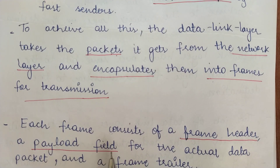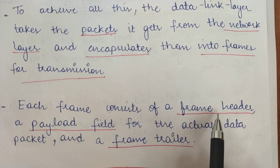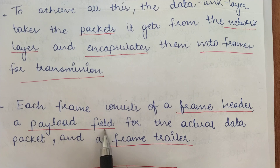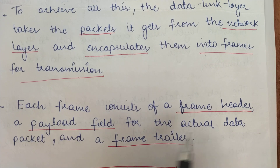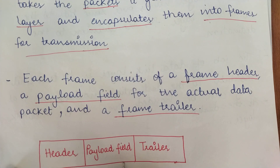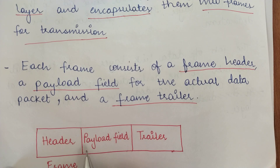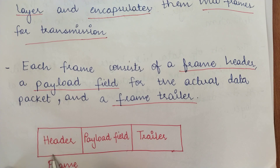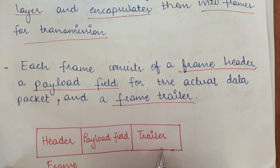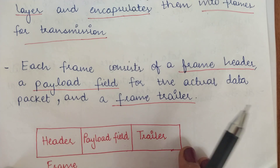Now, what is the format of a frame? Each frame basically consists of a frame header, a payload field, and a frame trailer. The payload field is the actual data packet. So in between is the payload field — the actual data you intend to transmit — and other than that you have a header at the beginning and a trailer at the end of the payload field. This is the basic format of a frame.